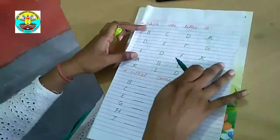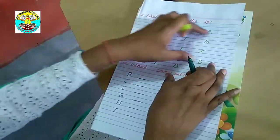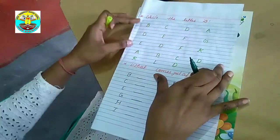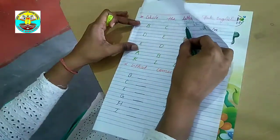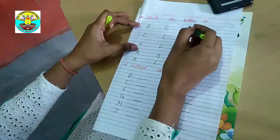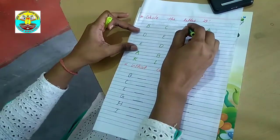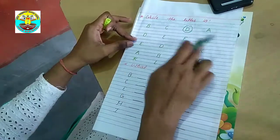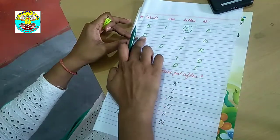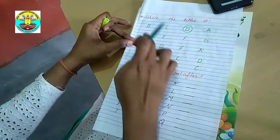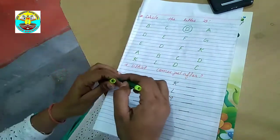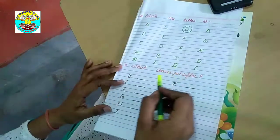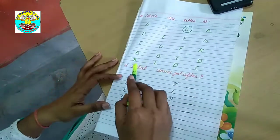My third worksheet is circle the letter D. Here I have written letters. Circle the letter D. Next worksheet is what comes just after.